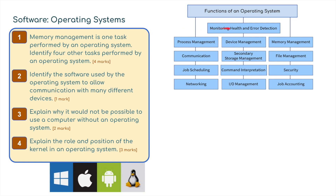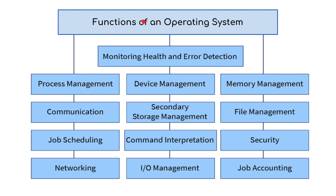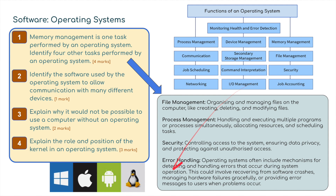For the first four questions, we're going to be covering the operating system. Question one: memory management is one task performed by an operating system, but identify four other tasks performed by an operating system - four marks. There are all these different things. If I choose four: file management, which is organizing and managing files on the computer like creating, deleting, and modifying files. Process management: handling and executing multiple programs or processes simultaneously, allocating resources and scheduling tasks.